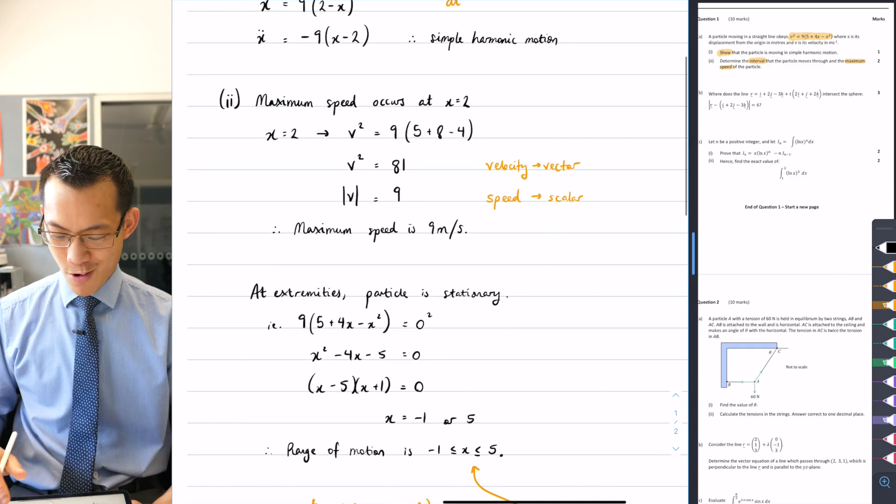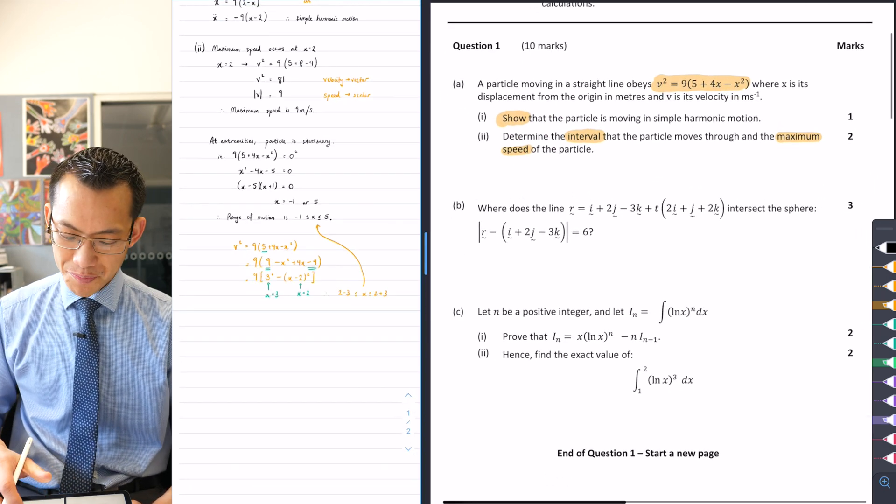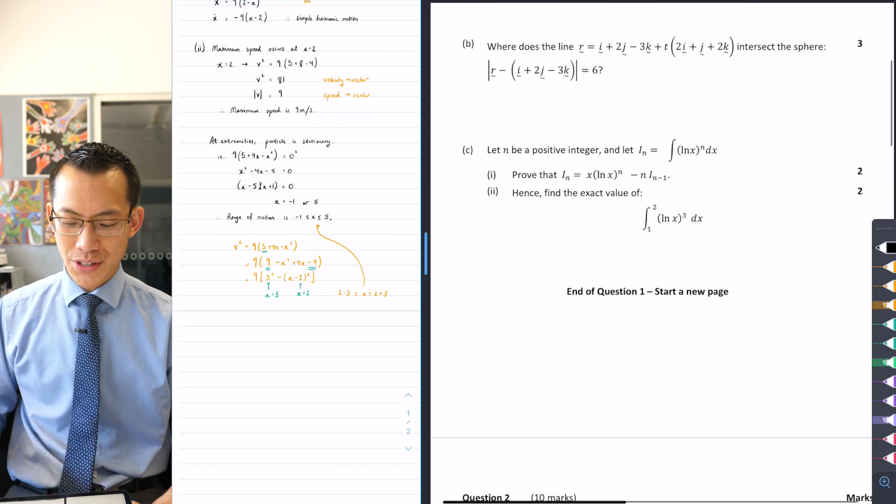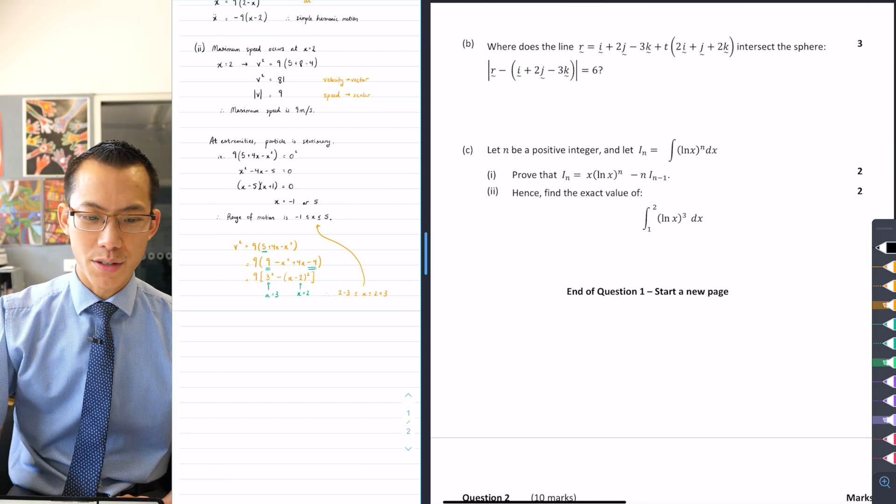All right, that was part A, 1A. Well done if you got your way through that. Let's have a look at part B together, which is a pretty classic 3D vectors question.